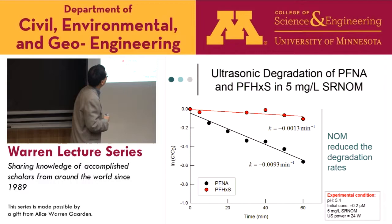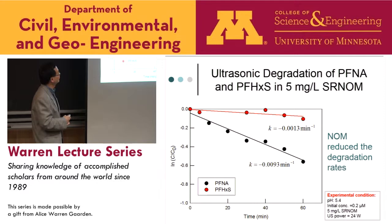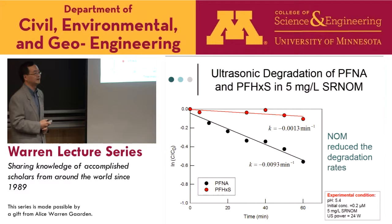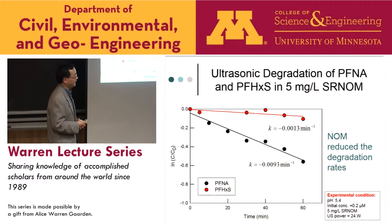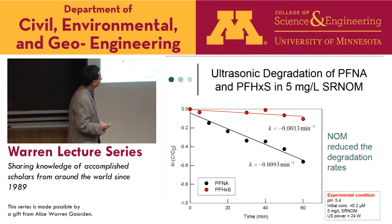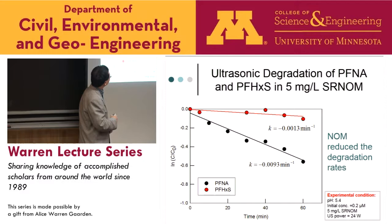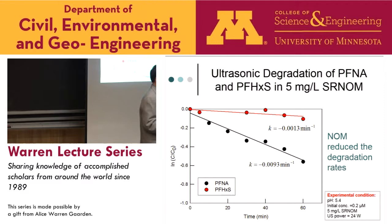The next test examined degradation in five milligrams per liter of Suwannee River natural organic matter — a typical NOM used in environmental studies. A slight to moderate drop in the first-order reaction rate constant was observed. NOM reduces degradation rates by competing for reaction sites and making PFNA and PFHxS less accessible to the bubble-water interface.